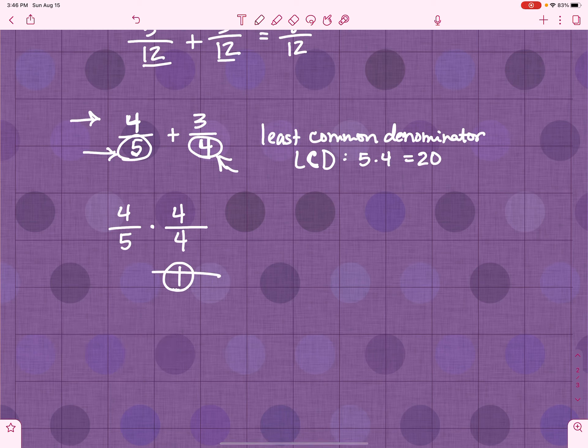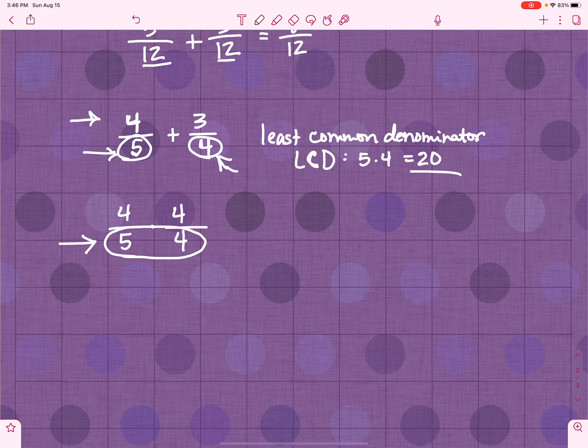So, I chose 4 over 4 because I know I need a 20 down here. That's why I chose 4. Notice I started with my denominator. I was like, okay, my LCD is 20. What do I have to do to the 5 to make it look like a 20? I have to multiply it by 4. If I have to multiply it by 4, I have to multiply the numerator by 4 as well.